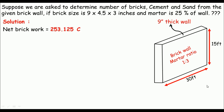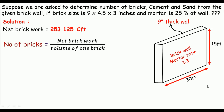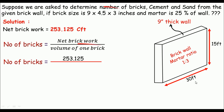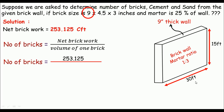Once we have the net brickwork, we can calculate the number of bricks: net brickwork divided by volume of one brick. The brick size is 9 × 4.5 × 3 inches, which converts to 0.75 × 0.375 × 0.25 feet. So number of bricks = 253.125 / (0.75 × 0.375 × 0.25) = 3600 bricks.